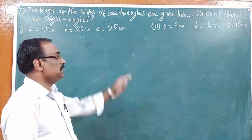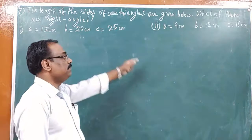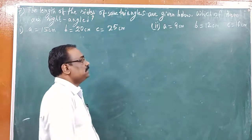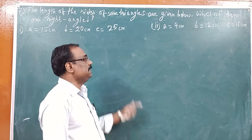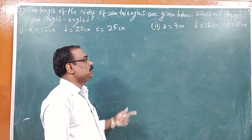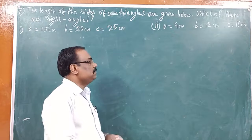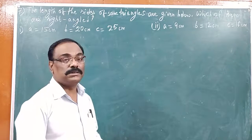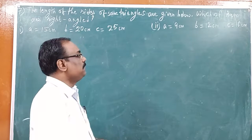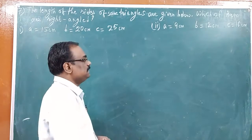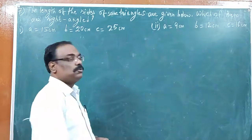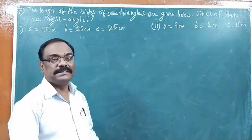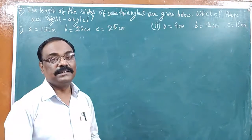In the same way, I have taken the second question also. Side A is equal to 9 cm, side B is equal to 12 cm, and side C is equal to 16 cm.